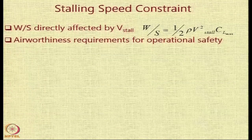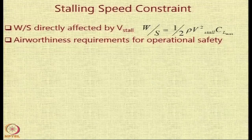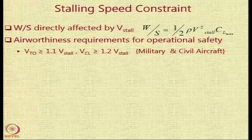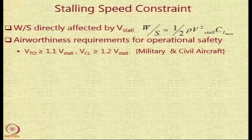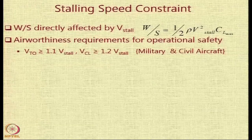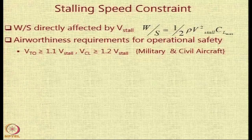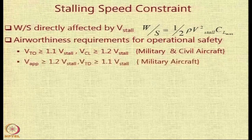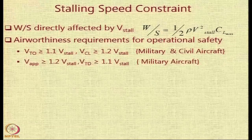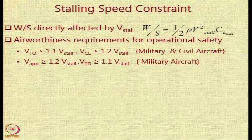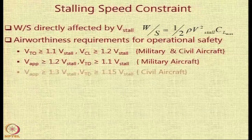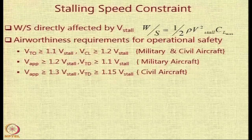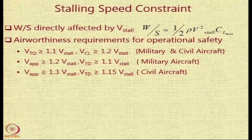The airworthiness requirements for operational safety are specified in some cases, especially in FAR 23. For FAR 25 — military and civil aircraft — V_takeoff has to be 1.1 times V_stall, and V_climb has to be 1.2 times V_stall or more. The approach speed has to be at least 20% higher than V_stall, and touchdown velocity at least 10% higher for military aircraft.